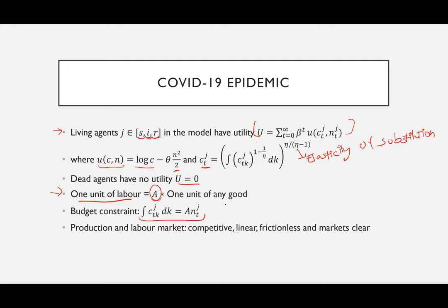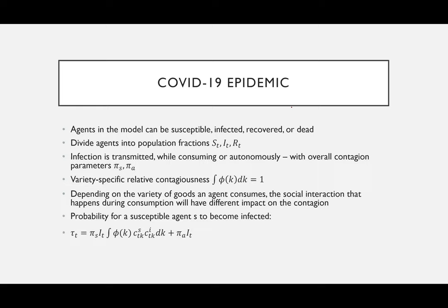For the SIR model, agents can be either susceptible, infected, recovered, or dead. We divide agents into different population fractions: S_t, I_t, and R_t. Infection is transmitted while either consuming socially or autonomously, with overall contagion parameters pi_S and pi_A. Pi_S is when you get infected after conducting a social activity, and pi_A is when you are randomly infected.